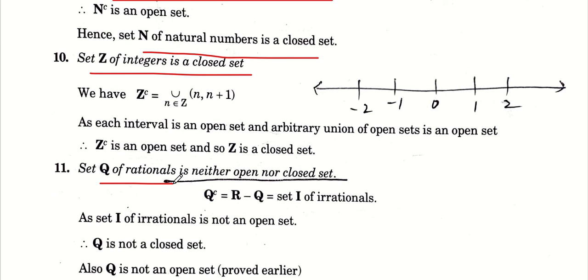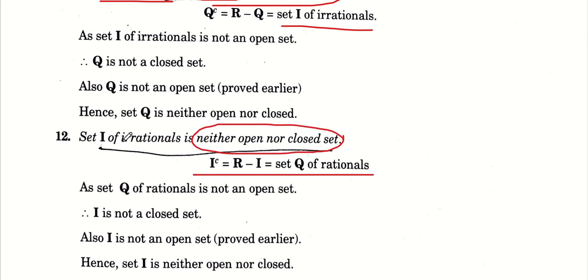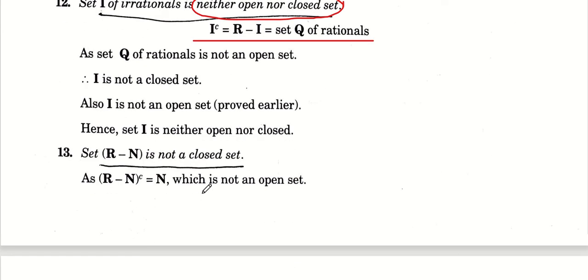Rational numbers का set Q, neither open nor closed set का best example है। क्योंकि इसका complement irrational numbers आएगा, जो open नहीं है, इसलिए Q closed नहीं है। Similarly, set of irrational numbers का complement rational numbers बनेगा जो न तो open है और न ही closed। इसलिए set of irrational numbers भी neither open nor closed का best example है।